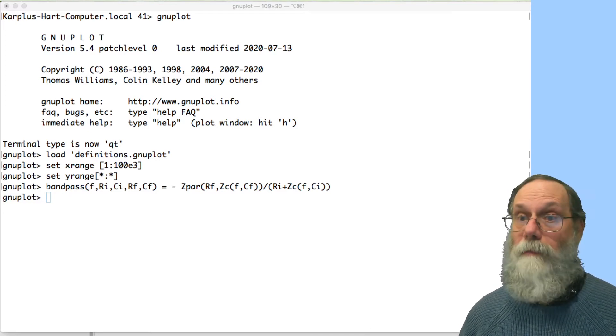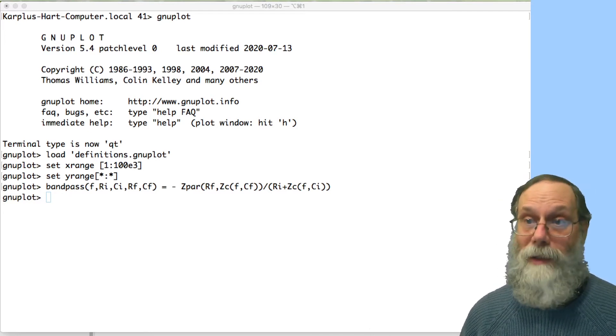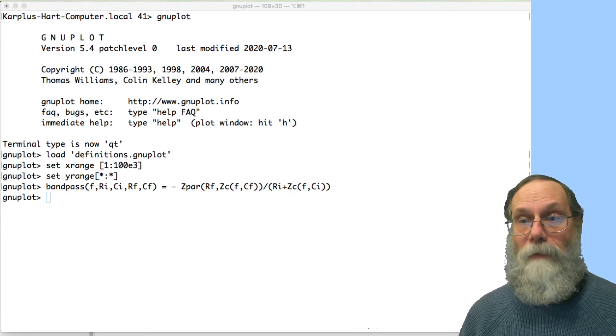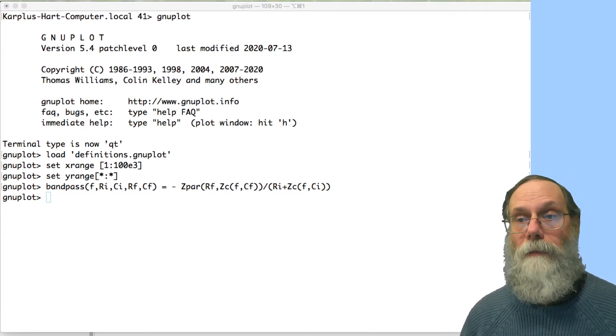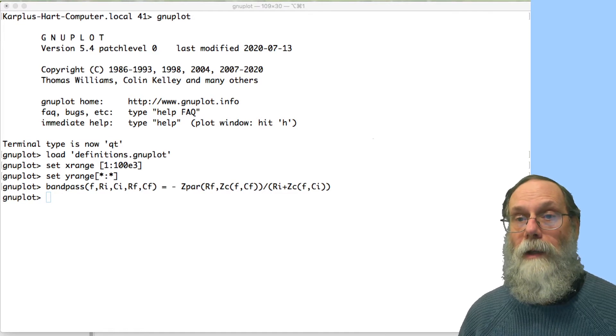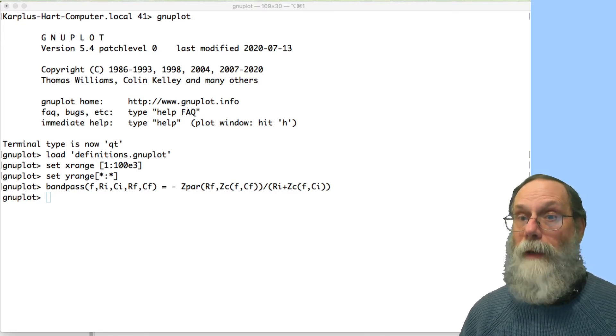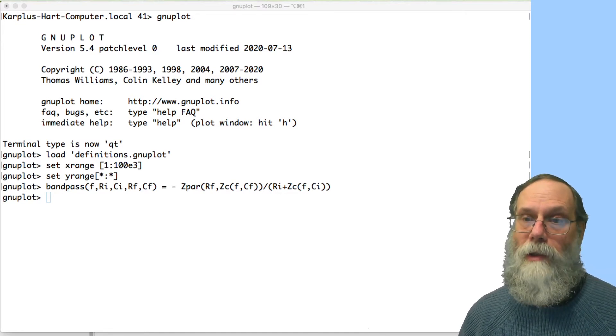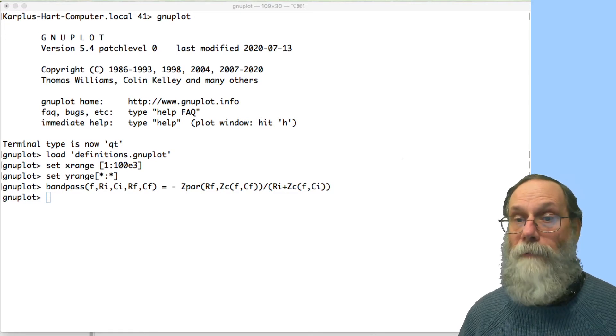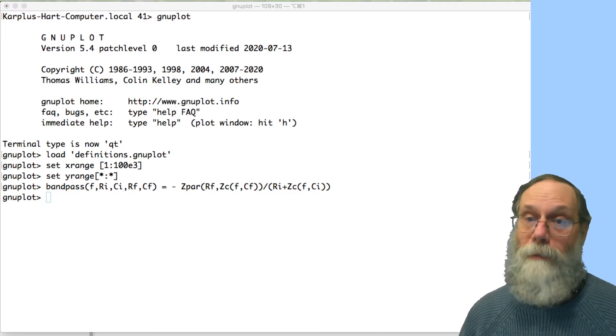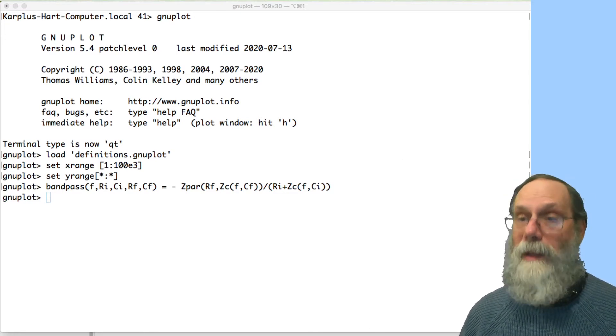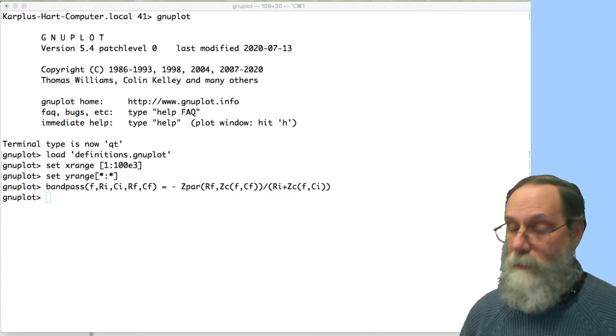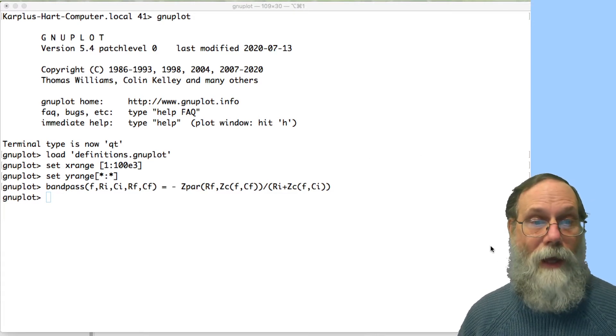What I've done here is to set up GNUplot, loading the definitions, setting an x and y range, and then define a bandpass filter as just using the definition minus the impedance of the feedback impedance in parallel, divide that by the input impedance.